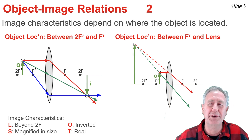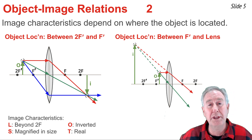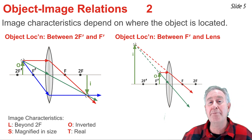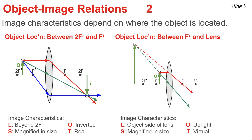Here we see the ray diagram for an object located less than one focal length from the lens — between F prime and the lens. For the first time, the refracted rays passing through the lens are spreading apart, or diverging. We determine the image location by extending these refracted rays backwards until they intersect, giving us an image on the same side of the lens as the object. The image arrow is right-side-up, so the orientation is upright. The size is magnified, and the type is virtual, since the refracted rays are diverging. For lenses, all virtual images are upright and located on the same side of the lens as the object.